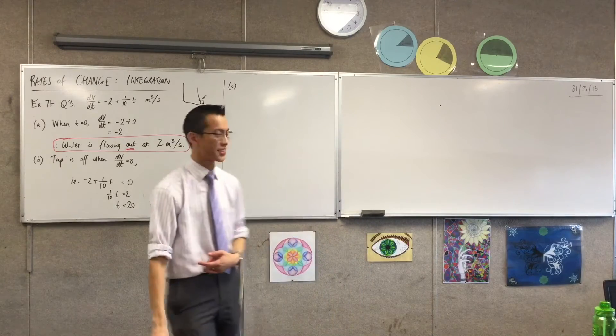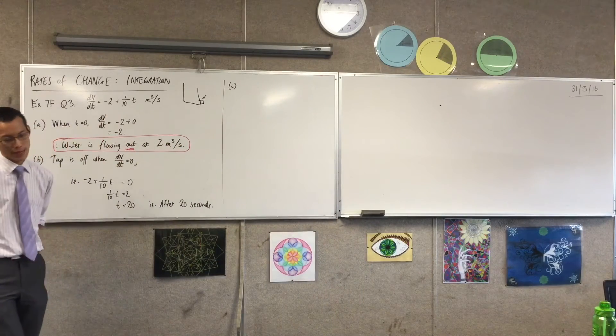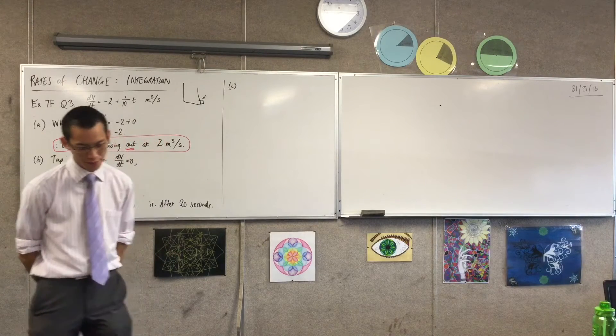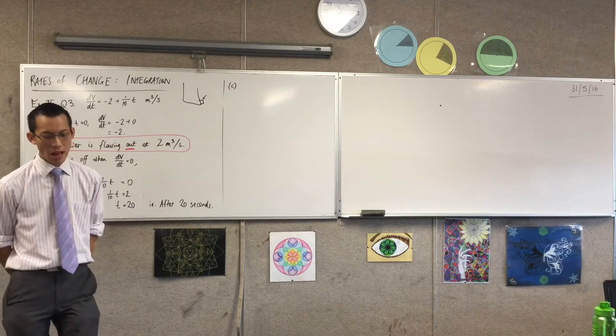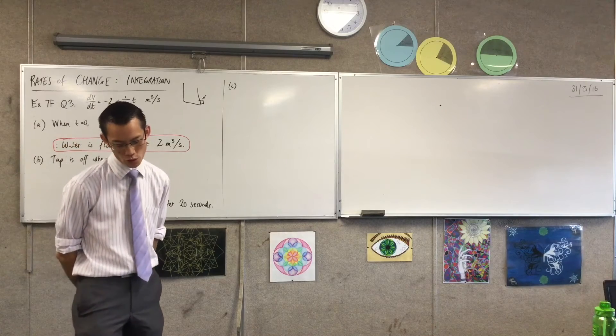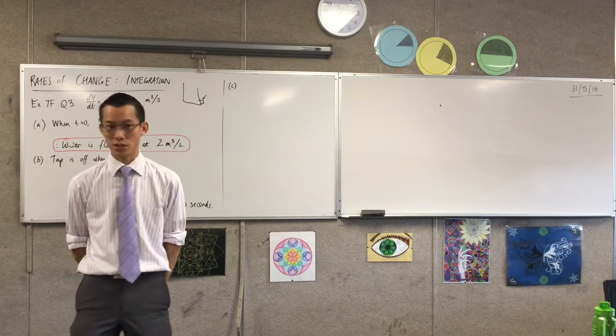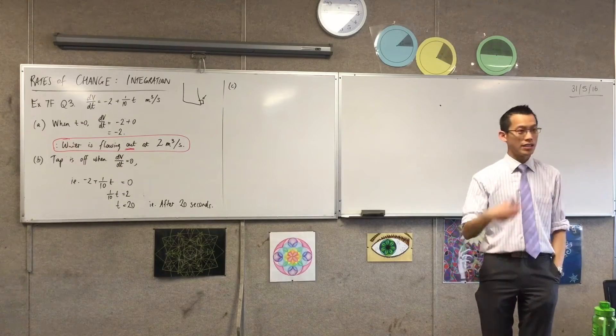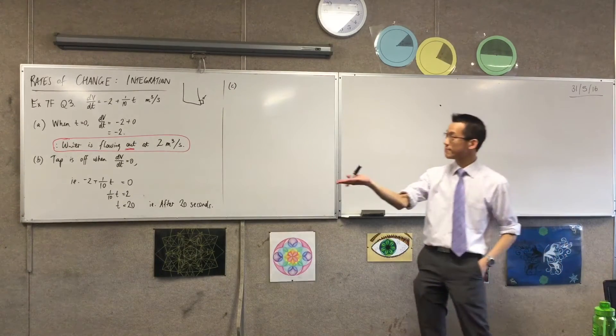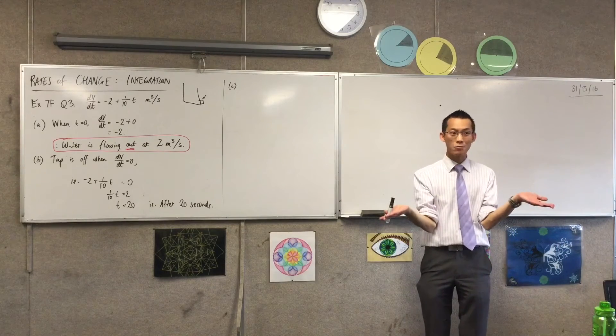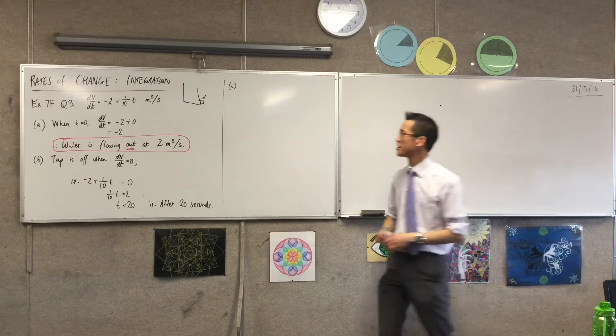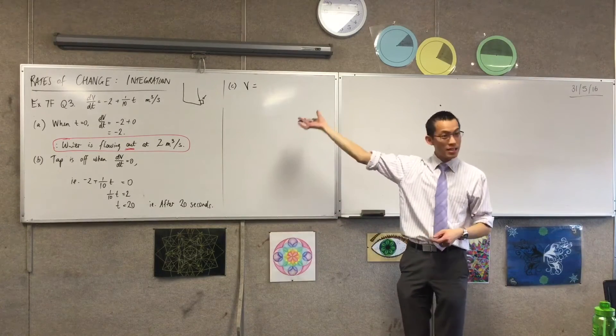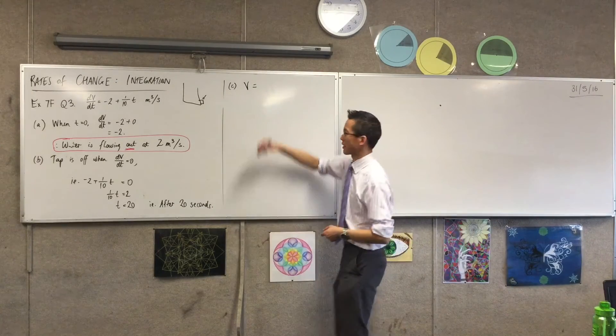And now it starts to get more interesting, so part C, have a read. It says, given that when the tap has been turned off, there's still 500 cubic metres of water left in the tank, find V as a function of time. So this is almost an identical scenario to before. I'm going to need to move from dV/dt to V. How do I do that? What's the tool? Integration. So the first thing I'm going to write is V equals, and then I'm going to integrate my flow rate.